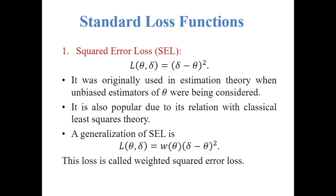Some standard loss functions. First, we consider the squared error loss function: L(theta, delta) is defined as (delta minus theta) squared. It was originally used in estimation theory when unbiased estimators of theta were being considered. It is also popular due to its relation with classical least squares theory. A general form is the weighted squared loss function: L(theta, delta) equals W(theta) times (delta minus theta) squared, where W(theta) is a function of theta called the weight of the loss function.